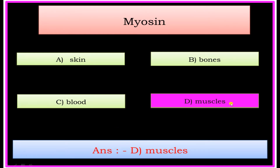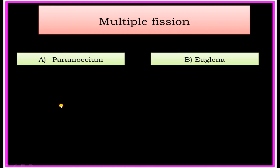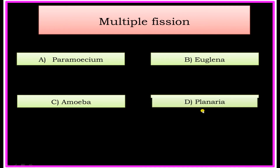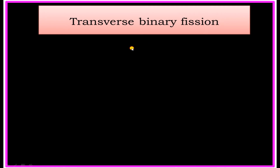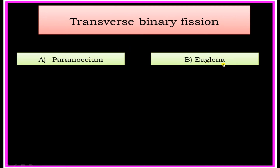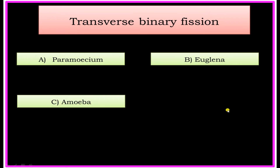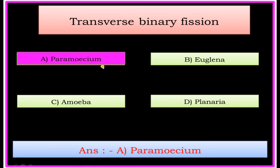Myosin — Options: A) Skin, B) Bones, C) Blood, D) Muscles. Answer: Muscles. Multiple Fission — Options: A) Paramecium, B) Euglena, C) Amoeba, D) Planaria. Answer: Amoeba. Transverse Binary Fission — Options: A) Paramecium, B) Euglena, C) Amoeba, D) Planaria. Answer: Paramecium.